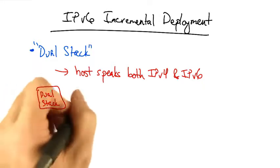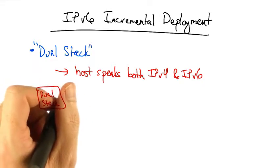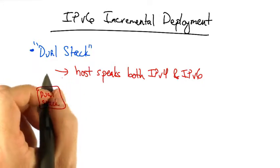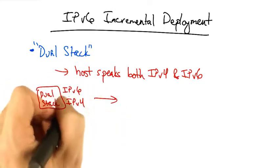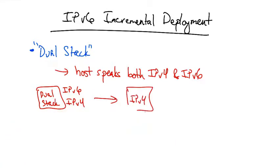What this means is that the dual stack host has to have an IPv4 compatible address. Either the host has both an IPv4 and an IPv6 address, thus allowing it to speak to an IPv4 host,